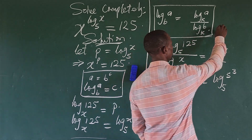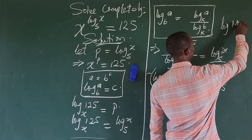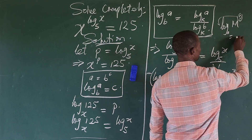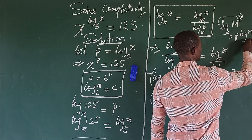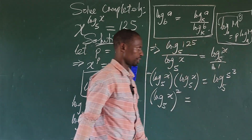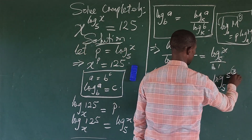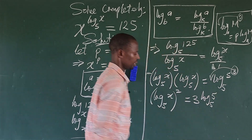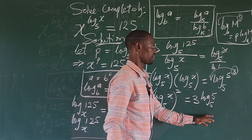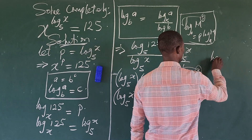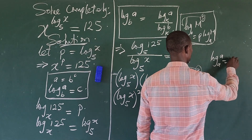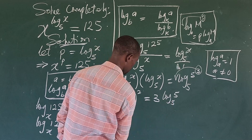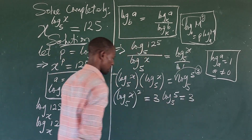Applying the logarithm power law — if you have log_e(m^p), you can bring the p out front as p·log_e(m) — the right side becomes 3·log_5(5). And since log_5(5) equals 1, this simplifies to just 3. So we have (log_x 5)^2 equals 3.